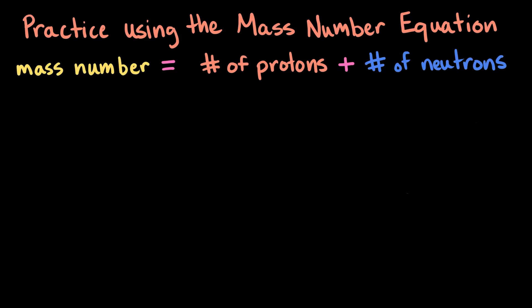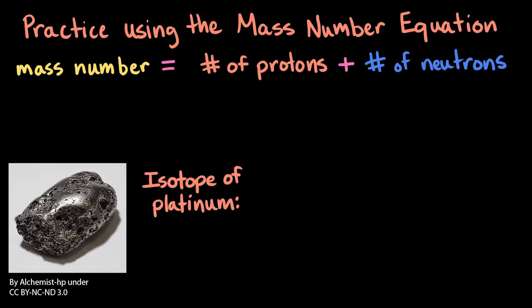Okay, more practice. This time with an isotope of platinum. How many neutrons does this isotope have based on the following notation? Pt-195.